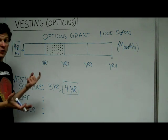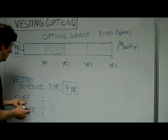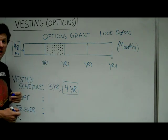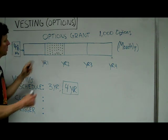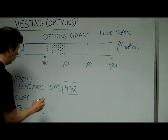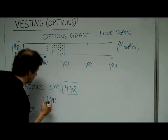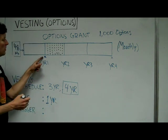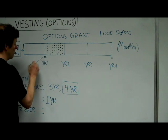However, if we're talking about what is the most common structure, and that's a four-year vesting schedule, we would also be talking about something called a cliff. What a cliff is—I'm talking about a one-year cliff—is you don't get any options until your one-year anniversary of employment. You get zero options until the one-year anniversary, and then you get 25% of your options.